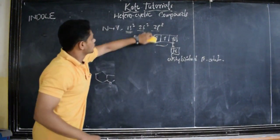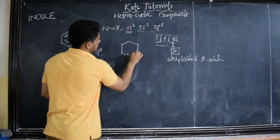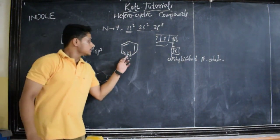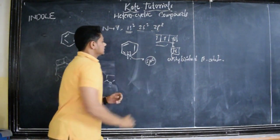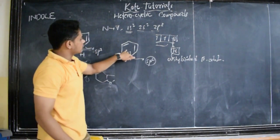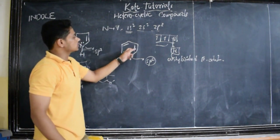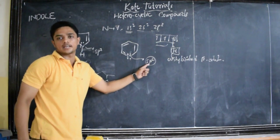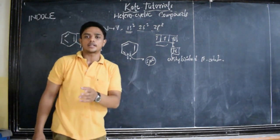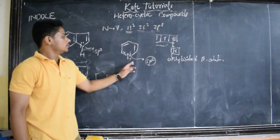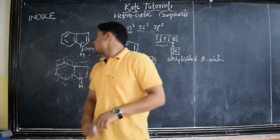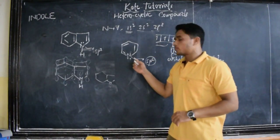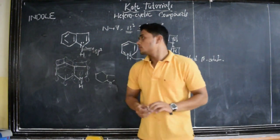The same contrast occurs with pyridine. If I consider pyridine, it has got a 6 pi electron system. Here also nitrogen is sp2 hybridized, but these lone pair of electrons are present in sp2 hybridized orbitals — not in the unhybridized pure orbital. The unhybridized pure orbital has one electron, whereas in indole the lone pair electrons are present in the unhybridized pure orbital. If you want to know more, please go to the pyridine video and there, in the orbital structure, I have explained it clearly.